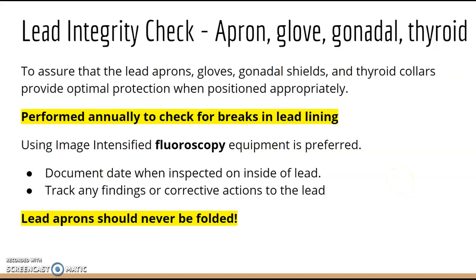Lead integrity checks include all types of lead protection: aprons, gloves, gonadal shields, and thyroid shields. All shielding must be tested annually using fluoroscopy equipment to check for cracks or breaks in the lead lining. Never fold your lead apron. Each apron should have a documented inspection date on the inside, or a barcode that can be scanned to track when it was last checked.